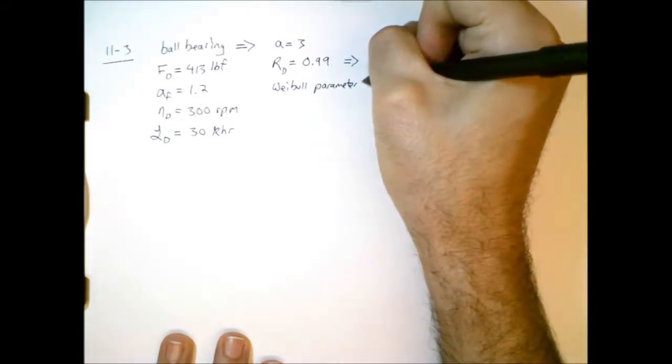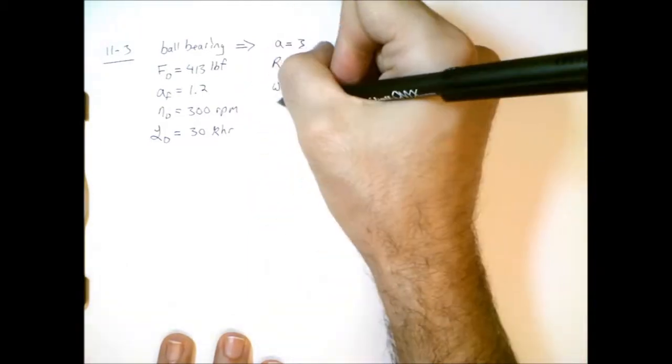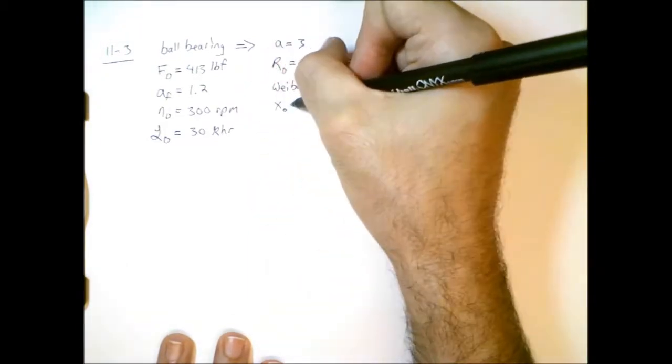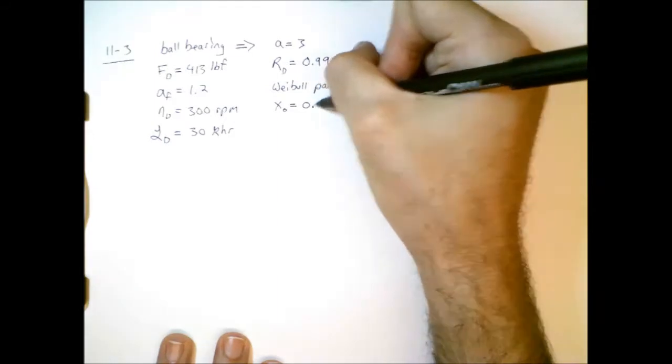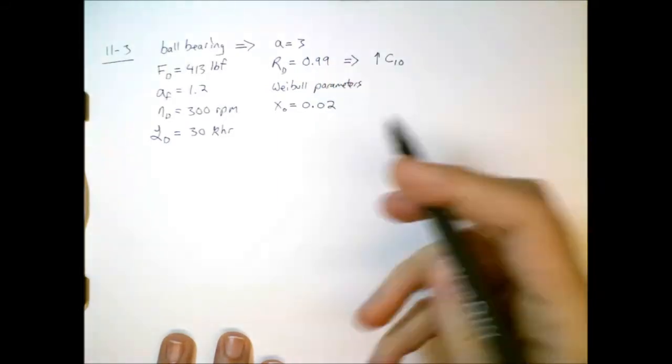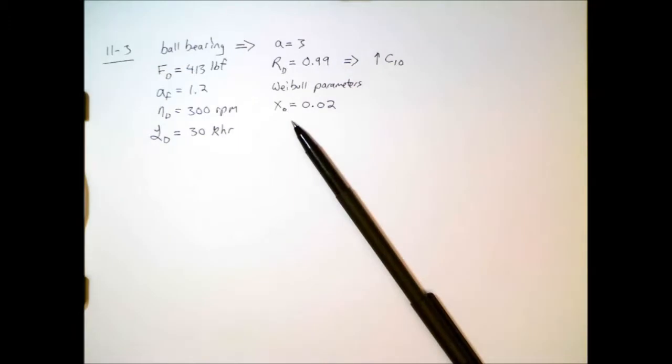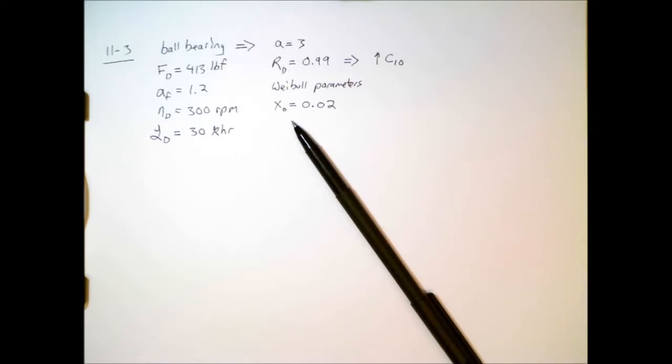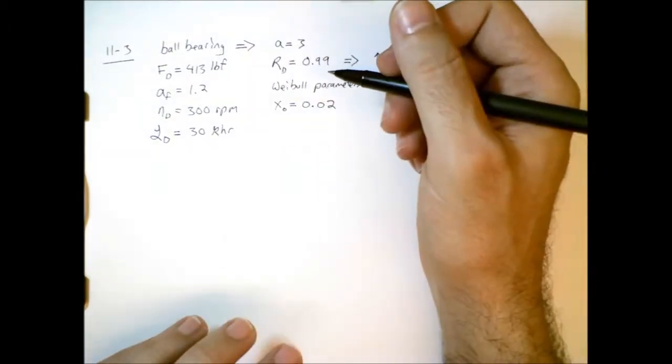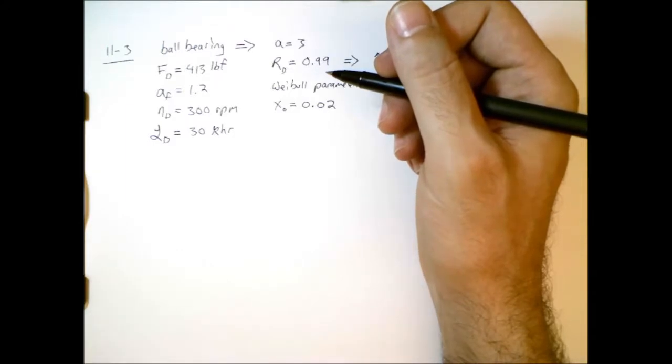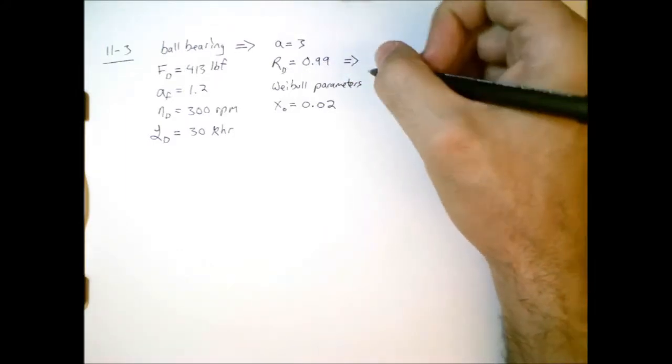We are also told what the Weibull parameters are. In this case, x0 is equal to 0.02. Now remember what x0 corresponds to. This is the minimum guaranteed non-dimensional life. So that means that at this non-dimensional life, we should not have any bearing failures at all. So we could actually convert this to revolutions and find out what that corresponds to. So remember, x0, that's equal to life divided by L10, so therefore L is going to be equal to x0 times L10, or 0.02 times 10 to the sixth, or 2% of a million. So that gives us an idea of what that life is, and that's really a very small value.